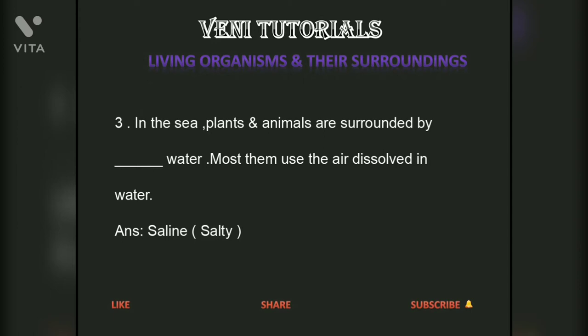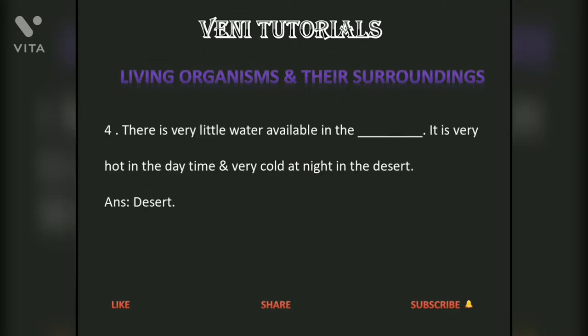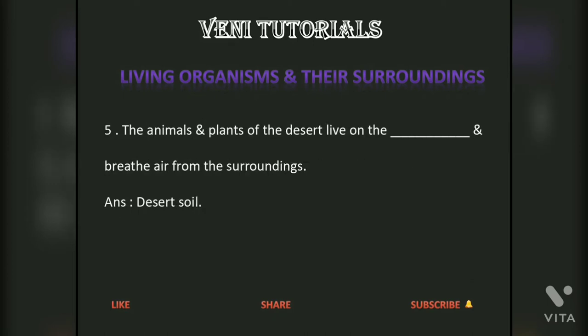In the sea, plants and animals are surrounded by water. Most of them use the air dissolved in water. Answer: Saline or salty water. There is very little water available in the desert. It is very hot in the daytime and very cold at night. Answer: Desert. The animals and plants of the desert live on the desert soil and breathe air from the surroundings. Answer: Desert soil.